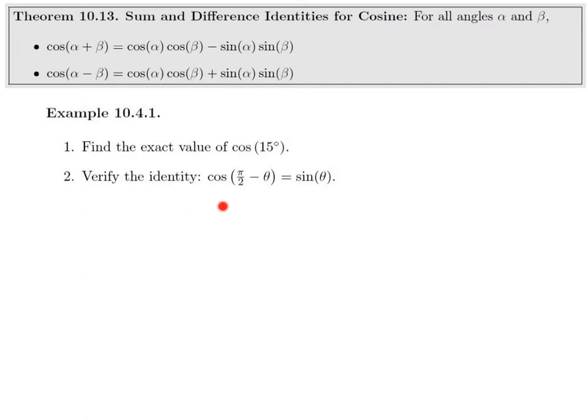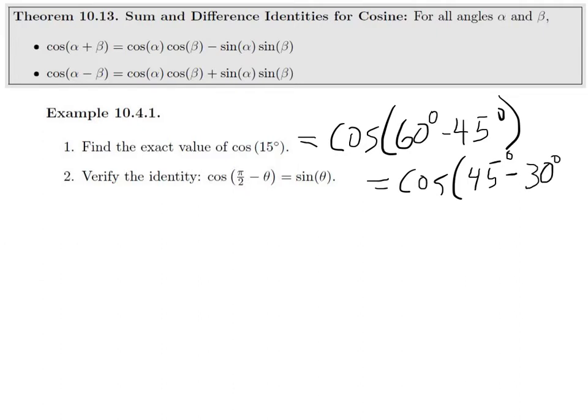This is a typical example: find the exact value of cosine 15. Because they say exact value, we're not using our calculator. For 15 degrees, the only unit circle angle we have that ends with 5 is 45 degrees. You could think of cosine 15 degrees as cosine of 60 degrees minus 45 degrees. You would then plug these values into your formula and evaluate all of these because it's all based on unit circle, and then simplify.